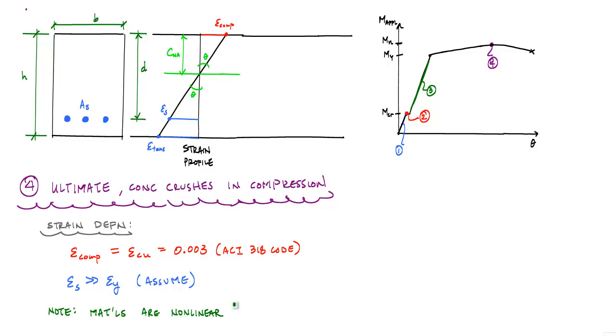The thing to note here is that the materials are now nonlinear. The compressive strain in the concrete at the top fiber has gone well beyond its proportional limit. And the steel, hopefully, has also gone well beyond its yield point. Because our strains have gone beyond their proportional limits or their yield points, our stress values or our stress profile has also become nonlinear.